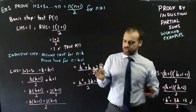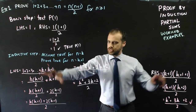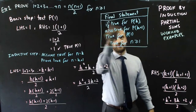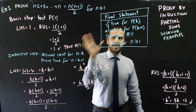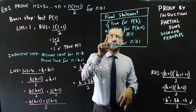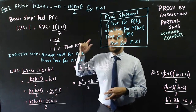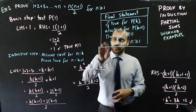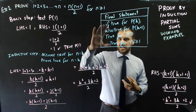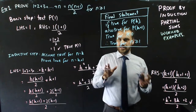There's one more thing most math teachers want you to write at the end — the final statement. Write: if true for P(k), then also true for P(k+1). That's what the inductive step showed. It is true for P(1), so if true for P(1) it's true for P(2), then P(3) — the domino effect. Therefore, true for all n greater than or equal to 1.